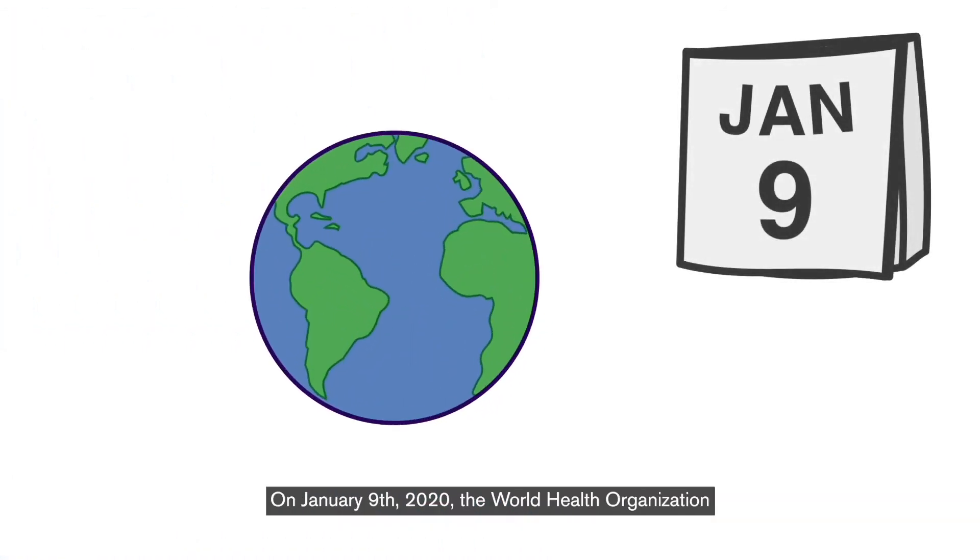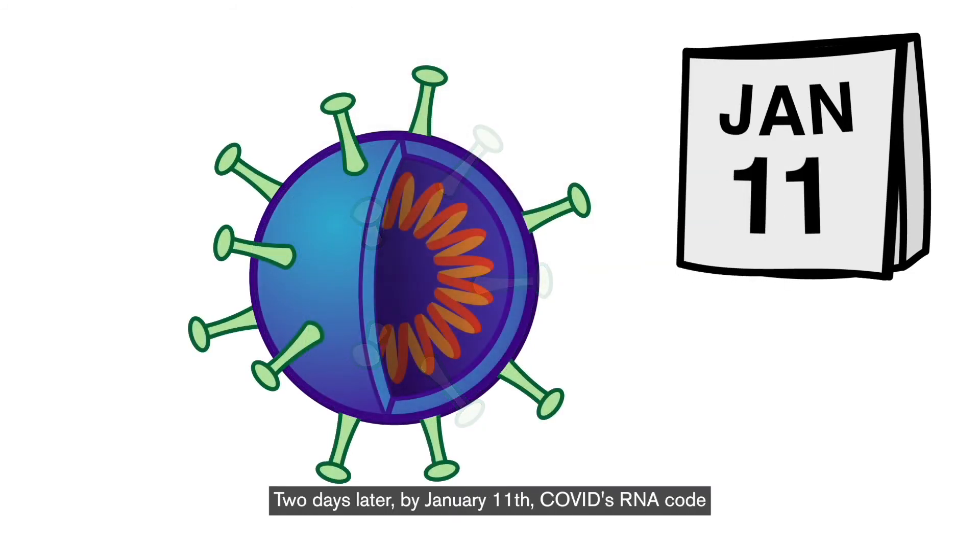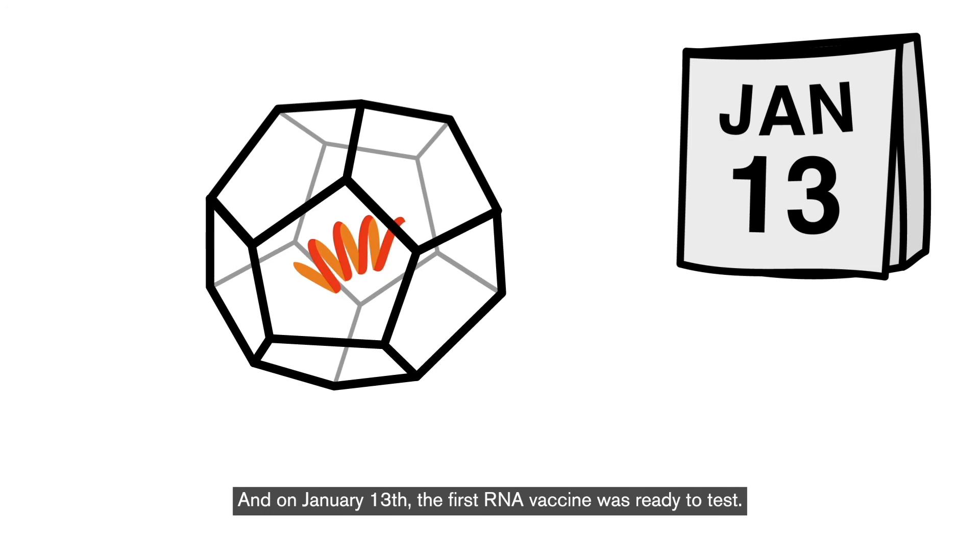On January 9th, 2020, the World Health Organization announced that COVID-19 was spreading. Two days later, by January 11th, COVID's RNA code was sequenced and released. And on January 13th, the first RNA vaccine was ready to test.